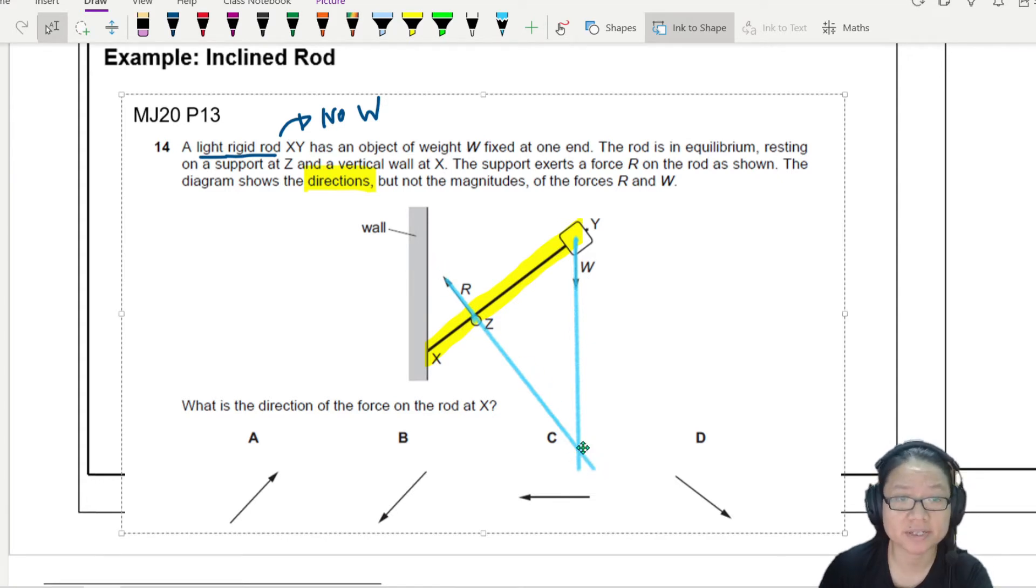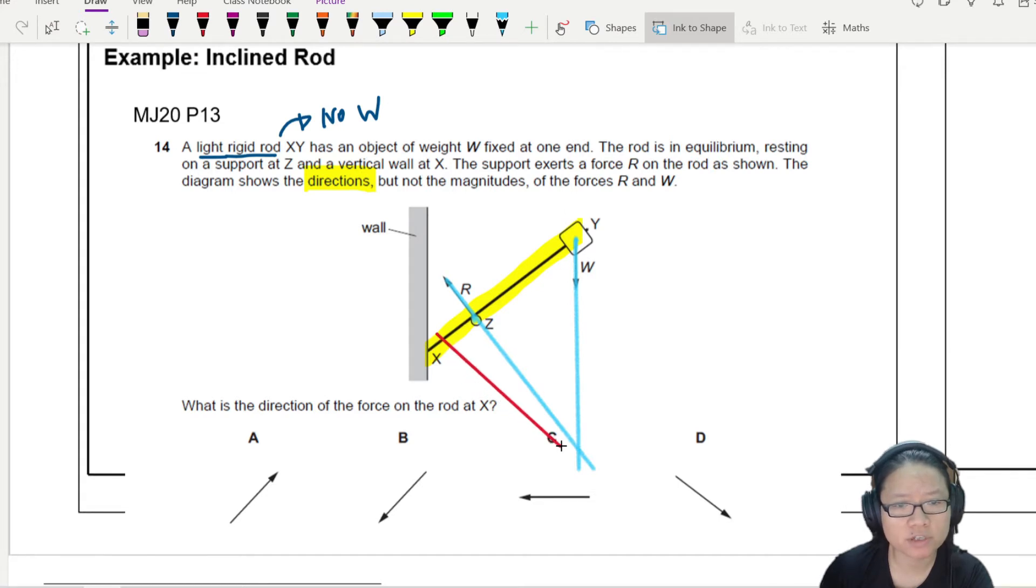The line of force on X must also join here. I'm going to change color and draw that line. Wherever this force is, it will be in this direction here. This will be the line of action of the wall on the rod.